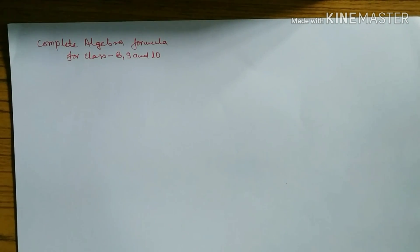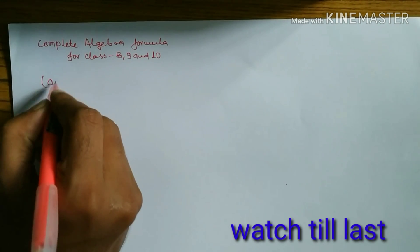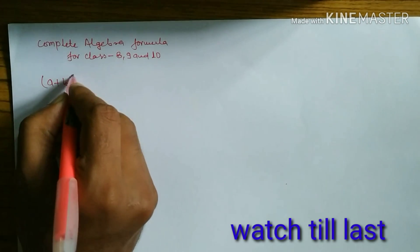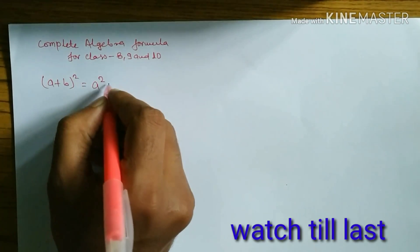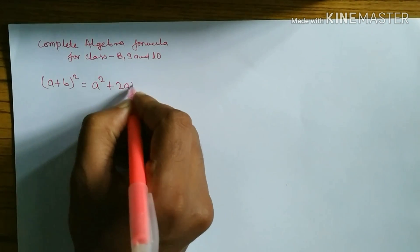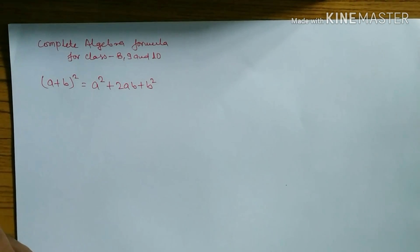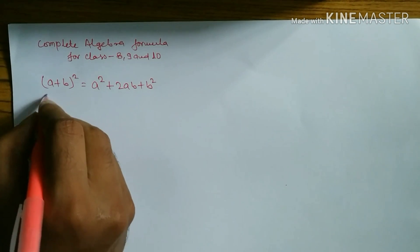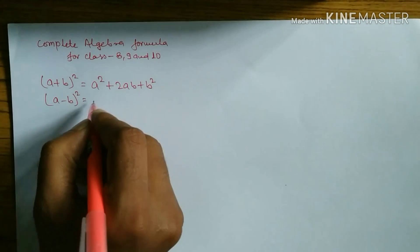Today I'm going to teach you algebra formulas for class 8, 9, and 10. The first formula is (a + b) whole square. The formula of (a + b)² is a² + 2ab + b². Similarly, another formula is (a - b) whole square.